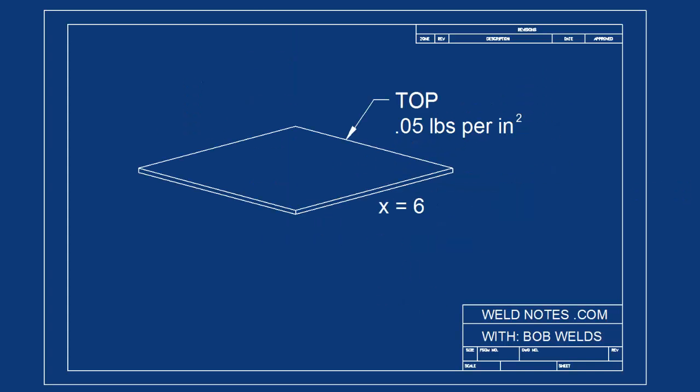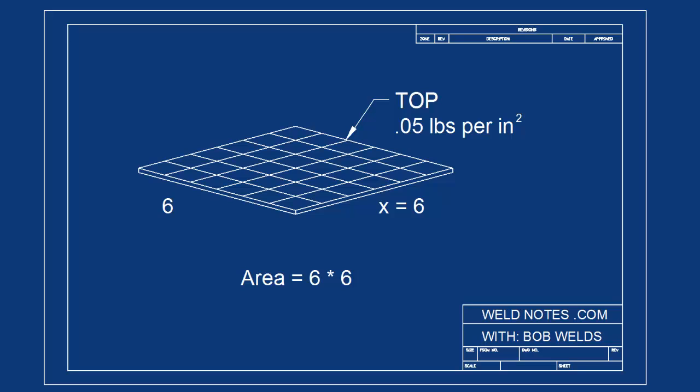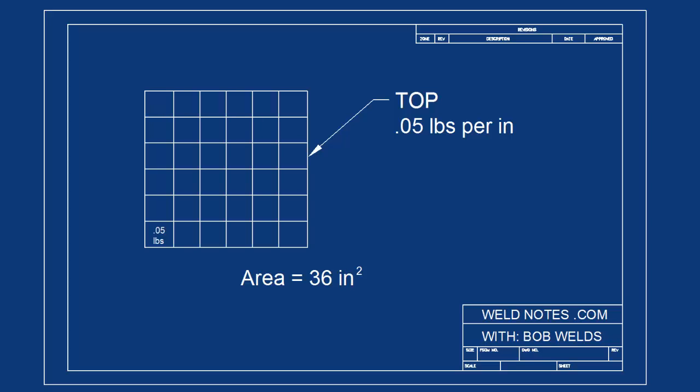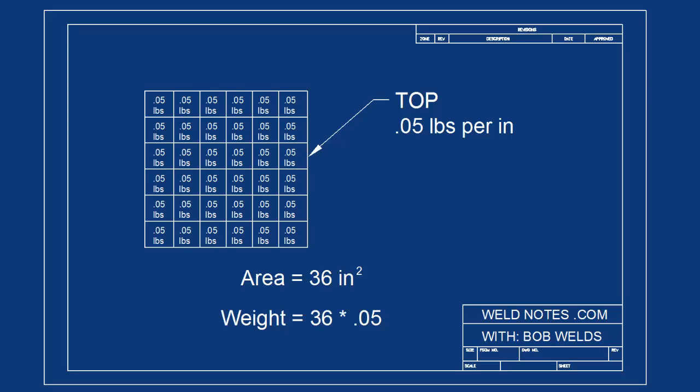Okay, now let's look at the top. If the length of one side, that is x, is 6 inches, the total area of the top would be 6 times 6, which is equal to 36 square inches. Remember that the top weighs 0.05 pounds per square inch. So 36 times 0.05 equals 1.8 pounds.